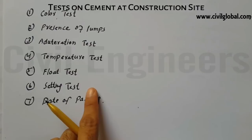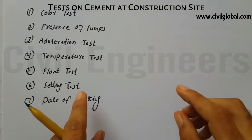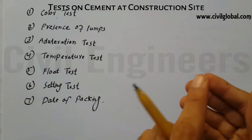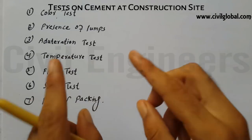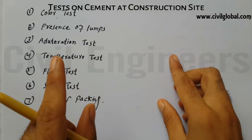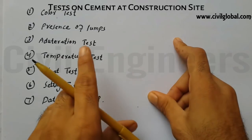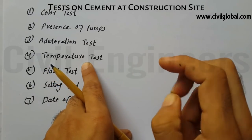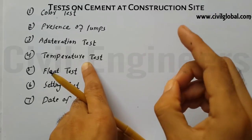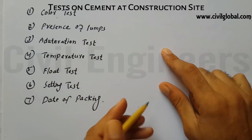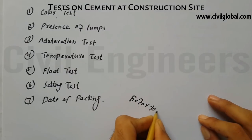The seventh and last important test is the date of packing. The strength of cement reduces with time — the older the cement, the lower the strength. It is important to check the manufacture date. Generally, cement should be used before 90 days from the manufacturing date.